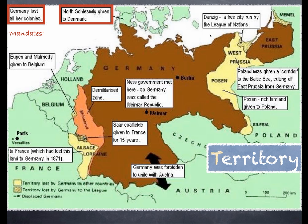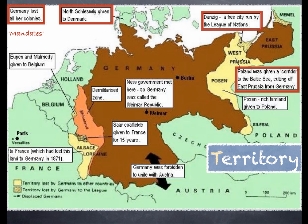Moving to the east of Germany: Danzig became a free city run by the League of Nations. Poland, which was reconstituted - reborn in the Treaty of Versailles - was given its own country through self-determination. It was given a corridor of land to the Baltic Sea, the so-called Polish corridor, so Poland could have access to the Baltic. A consequence is Germany loses West Prussia and Posen, which contains rich farmland, and Germany is effectively split in two, with East Prussia cut off from the rest of Germany by the Polish corridor.